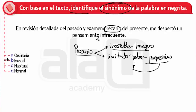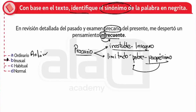Me despertó un pensamiento infrecuente. Recuerden que el prefijo in- implica negación de la frecuencia. Frecuente es constante o permanente, entonces infrecuente sería inconstante. Me piden acá sinónimo. Infrecuente es aquello que es inusual. Ordinario es lo que siempre sucede, entonces sería antónimo. Habitual sucede siempre, también es antónimo.